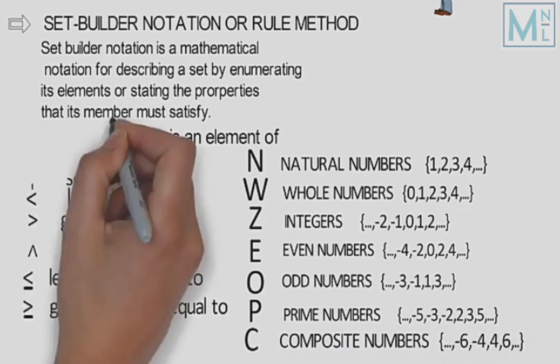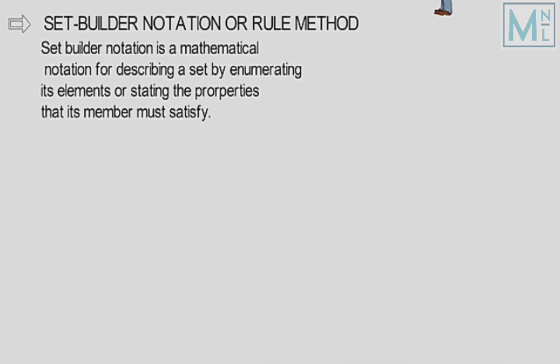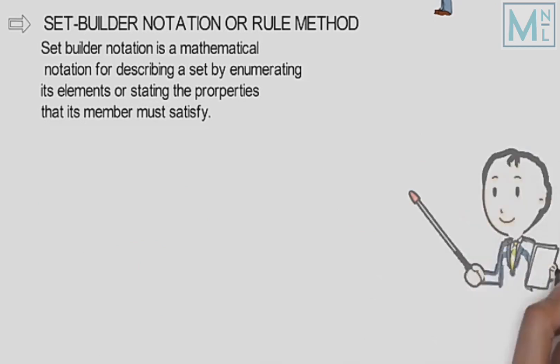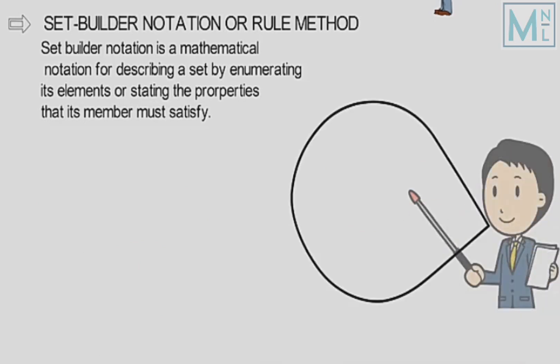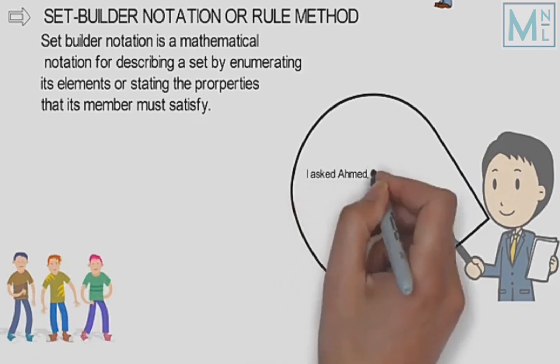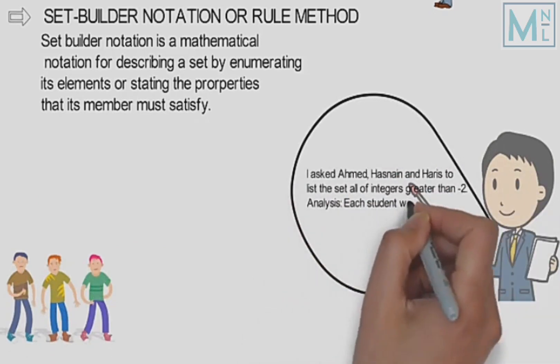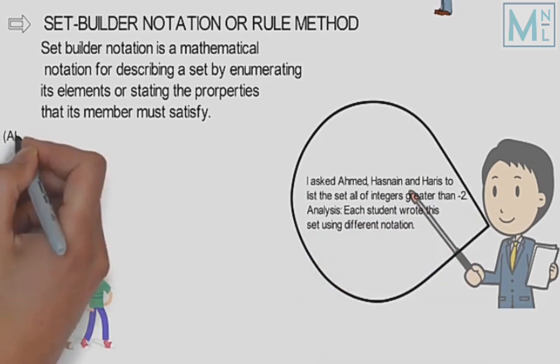Ab aate hain set-builder notation par, aur usko samajhne ke liye ek misal deta hoon. Main ne apne team students Ahmad, Hasanen, aur Haris se kaha, ek set banayein integers ka jinn ke elements minus two se zyada hoon.